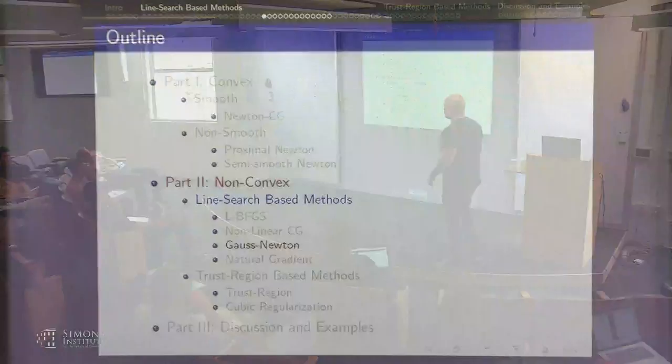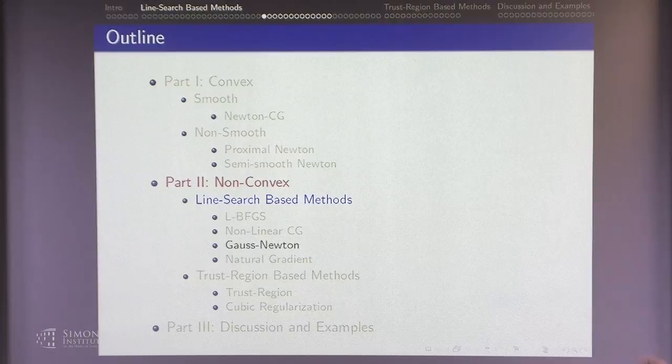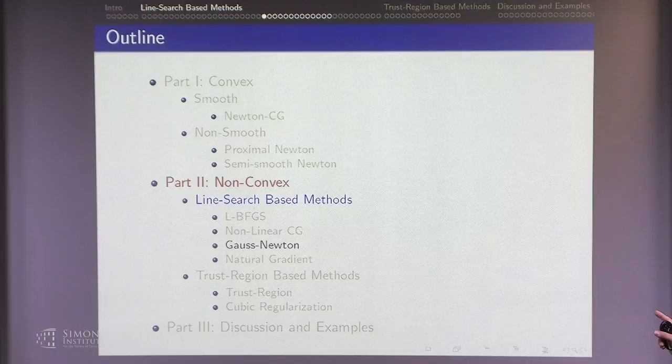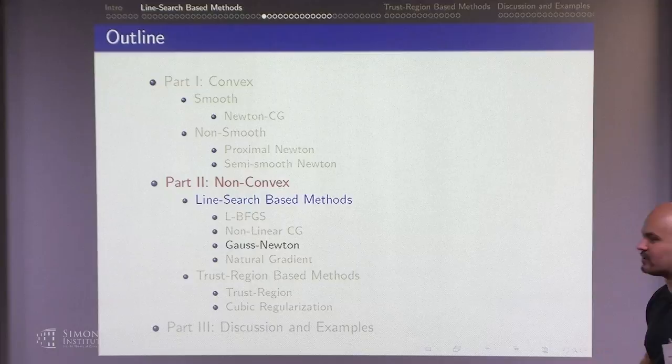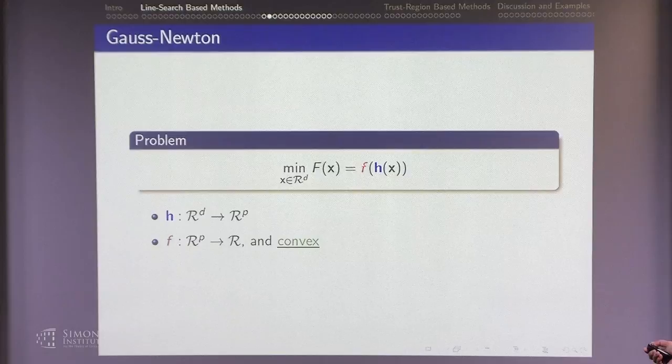Let me push on to Gauss-Newton. Gauss-Newton is bread and butter in scientific computing, particularly for PDE inverse problems. When I moved from scientific computing to machine learning, I realized no one even knew what Gauss-Newton was, which was very interesting. My problem is minimizing a composition f ∘ h, where h is a vector-valued function from R^d to R^p, and f is a convex real-valued function. The Jacobian of h at any point is a p×d matrix. The gradient of the composed function is J_h^T times the gradient of f evaluated at h.